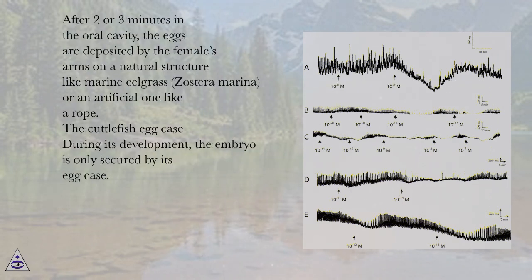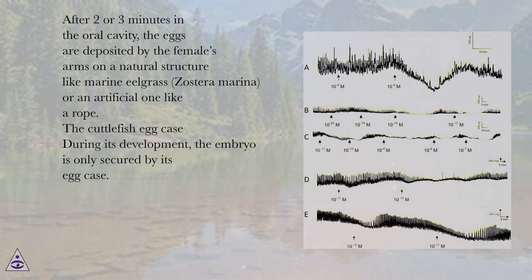After 2 or 3 minutes in the oral cavity, the eggs are deposited by the female's arms on a natural structure like marine eelgrass, Zostera marina, or an artificial one like a rope.